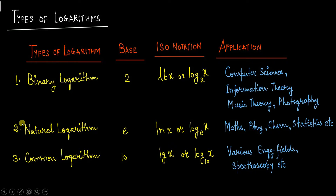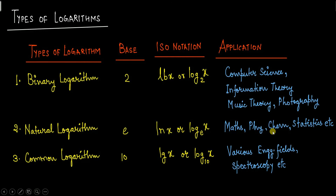The second type is natural logarithm, where the base is e. This e is not a variable — it is a constant. Whenever the base is e, the ISO notation is ln x, meaning log x to the base e. Natural logarithm has a wide range of applications in maths, physics, chemistry, and statistics.